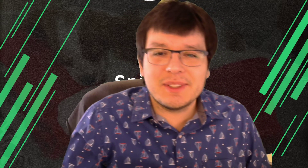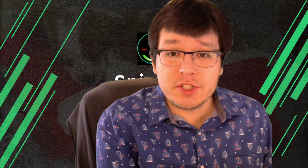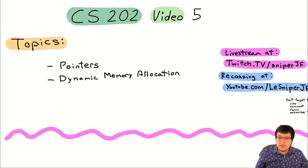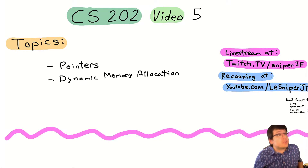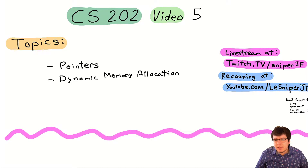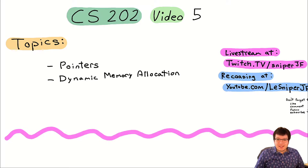Good morning everybody, welcome to CS202 online video 5. Today we are changing gears from what we've been talking about for the past few days as we start talking about pointers. That's kind of like phase 2 of the class. Phase 1 was talking about classes and object-oriented programming, and we haven't covered everything. We are now going to talk about pointers.